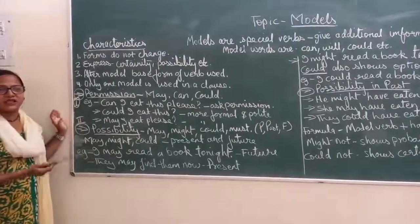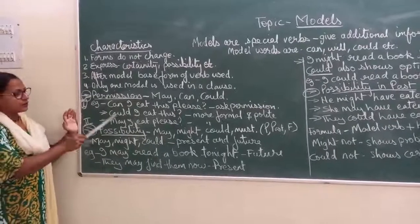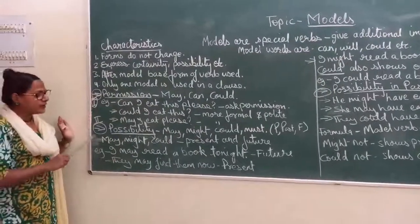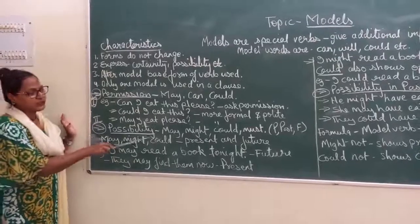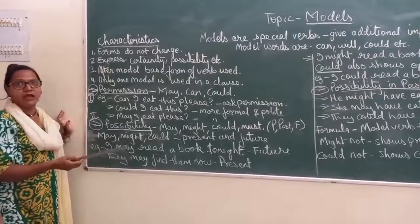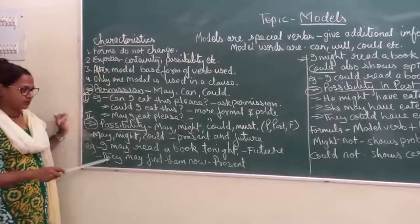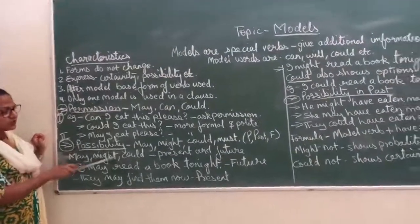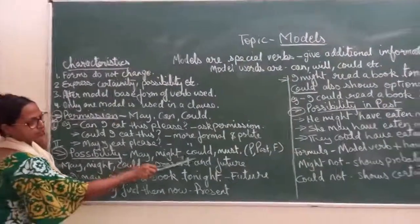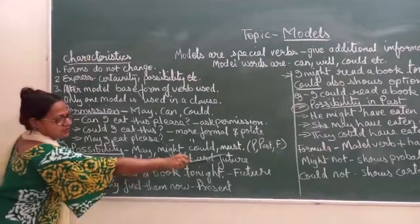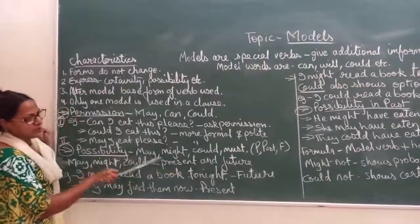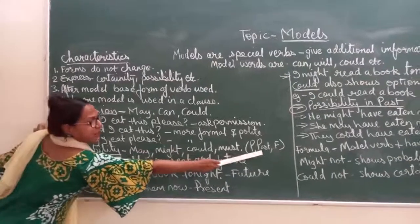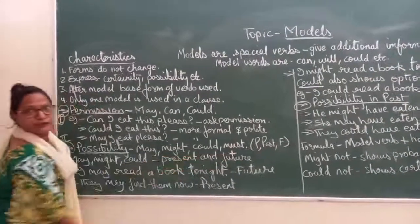Can is a bit direct, but could and may are more polite ways of asking for permission. The second use is possibility — it may happen or may not. For possibility, the modals used are may, might, could, and must. These four words are used for present, past, and future.